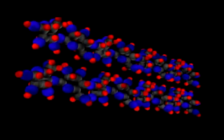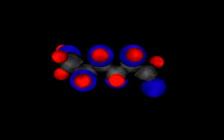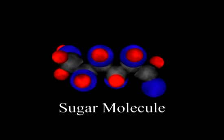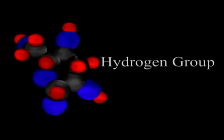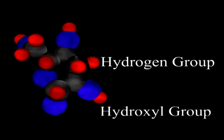All carbohydrates are built from molecular monomers or subunits called sugars that contain only carbon, hydrogen, and oxygen atoms. The typical sugar has a backbone of three to seven carbon atoms. Most of these carbon atoms have a hydrogen group and a hydroxyl group attached to them.